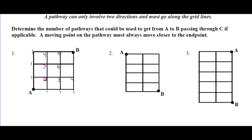Three plus three is six. Four plus six is ten. Four plus six is ten and twenty. So that's the counting way — it gives you the same answer as six factorial over three factorial, three factorial.